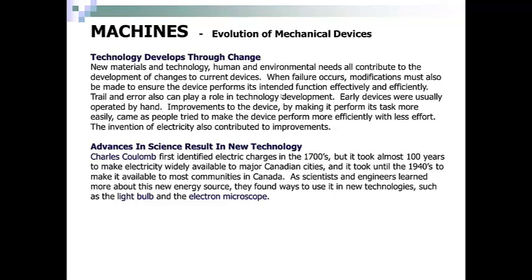The invention of electricity also contributed to improvements. Charles Coulomb first identified electrical charges in the 1700s, but it took almost 100 years to make electricity widely available to major Canadian cities, and it took until the 1940s to make it available to most communities in Canada. As scientists and engineers learned more about this new energy source, they found ways to use it in new technologies, such as the light bulb and the electron microscope.